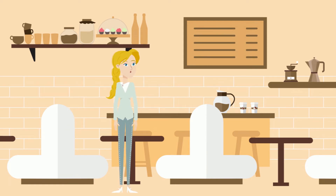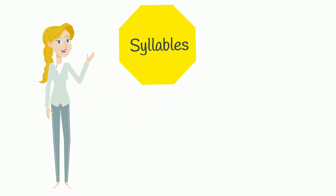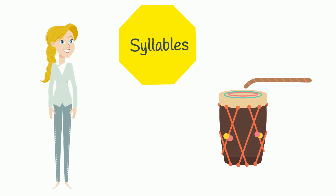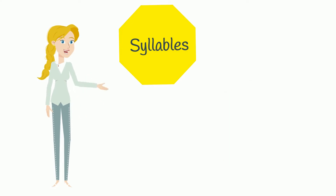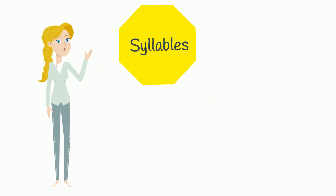Hello again and welcome back to your second week of learning how to read. What is a syllable? A syllable is a part of a word that contains sounds. We sometimes refer to it as the beat in a word. Another way to describe it is a mouthful of word. Watch how our jaw moves when we say words to show syllables.